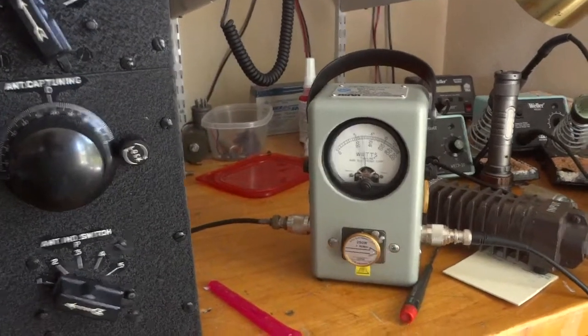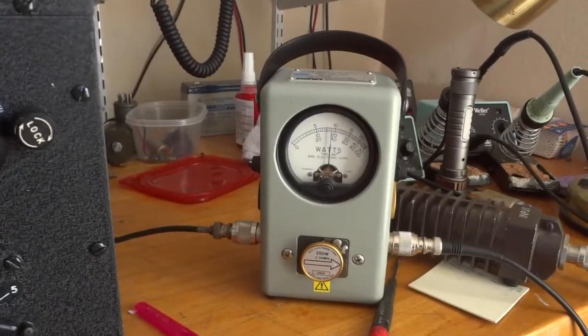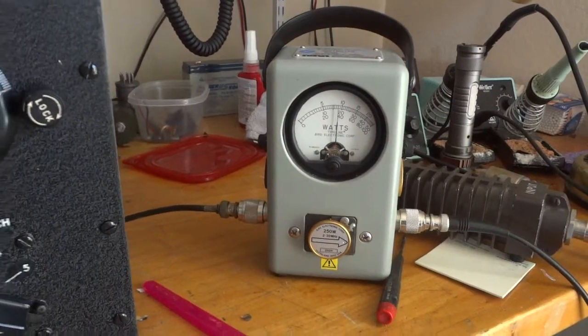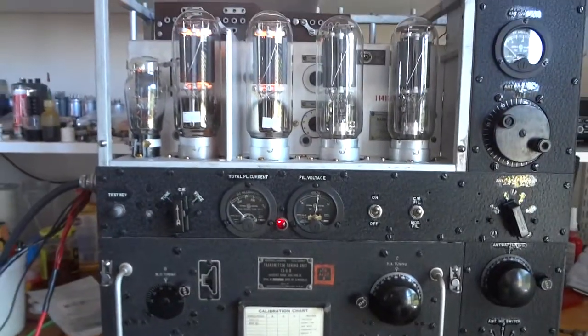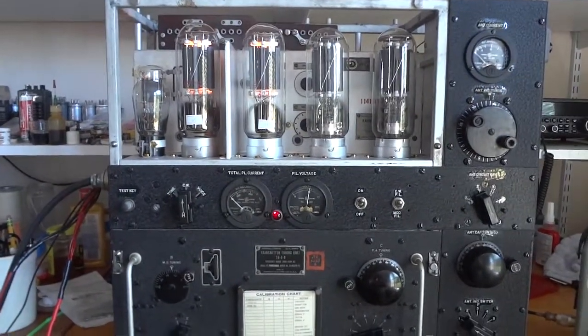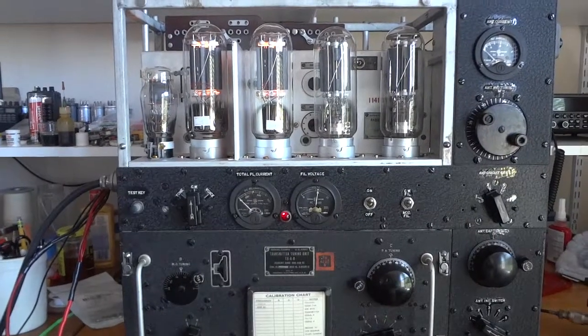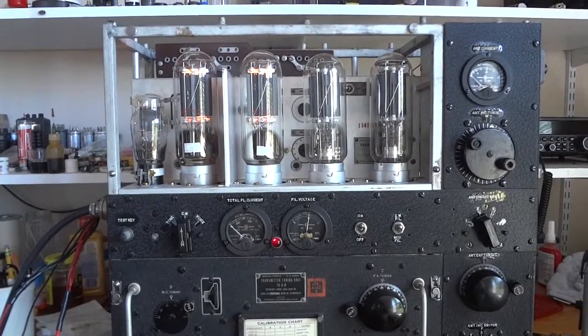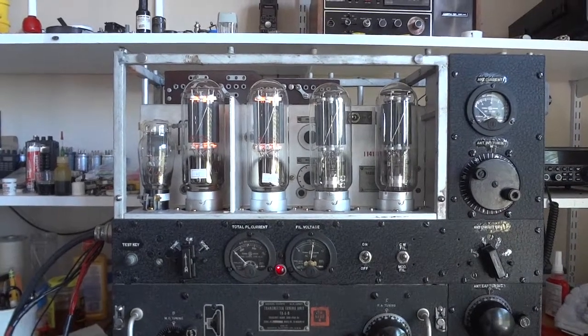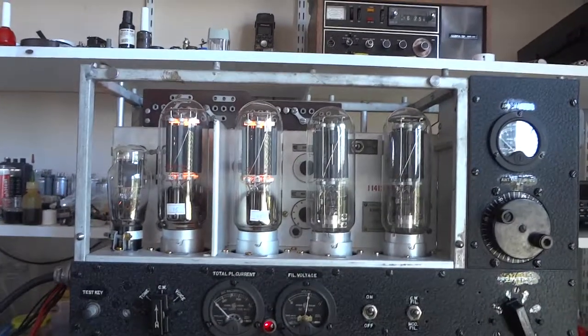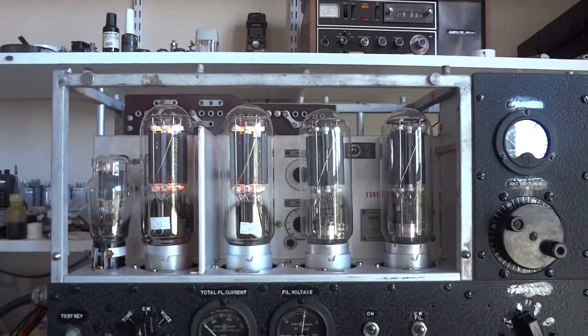And we rely on our Bird watt meter. The BC-375 - very robust, very reliable transceiver - and it works great with Chinese tubes. So don't spend $1200 on four General Electric tubes. Spend $50 on four Chinese tubes and they work just as good.